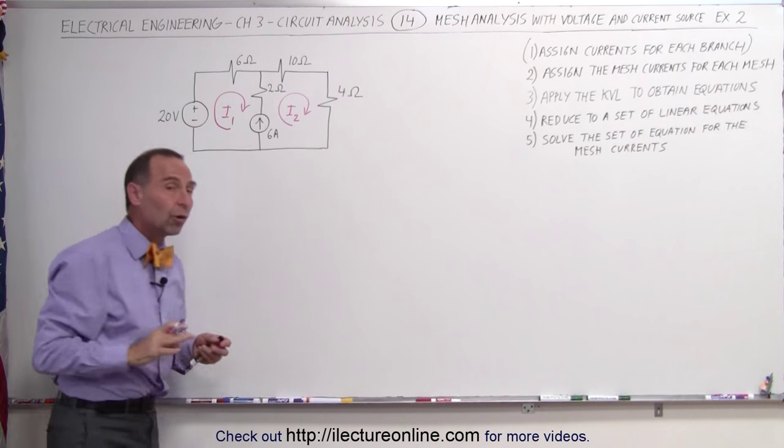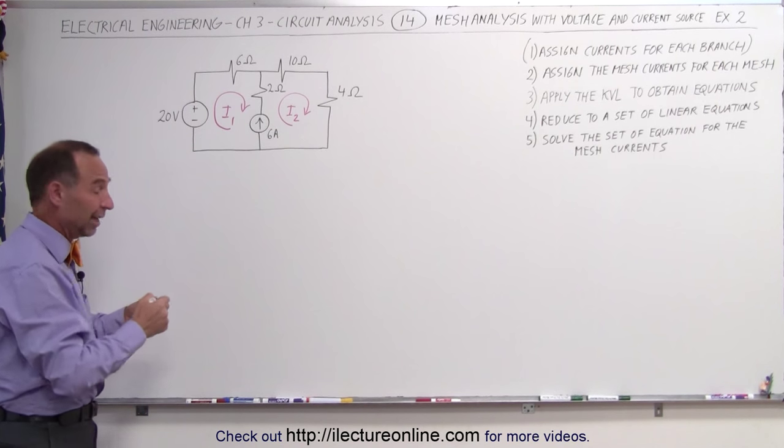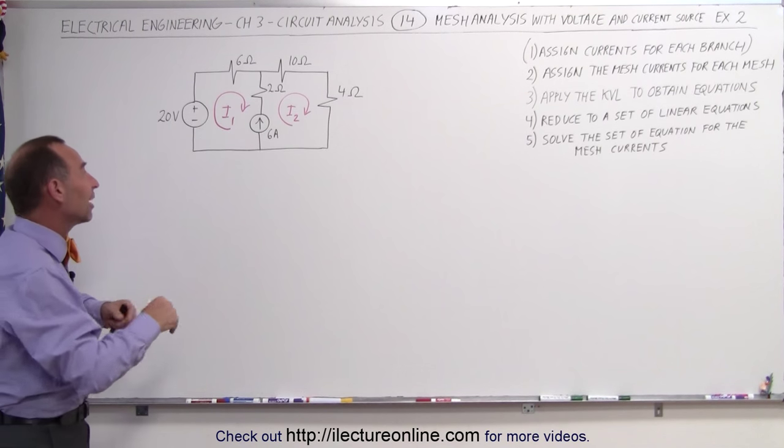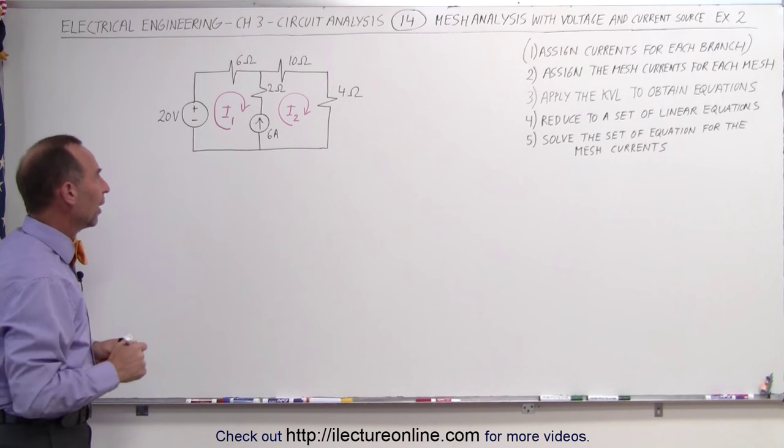We can draw the direction of the mesh currents any way you like. It doesn't have to be the actual correct current. If we find that our answer is negative, that simply means that the direction that we chose was opposite of what it actually is, and that's quite all right.